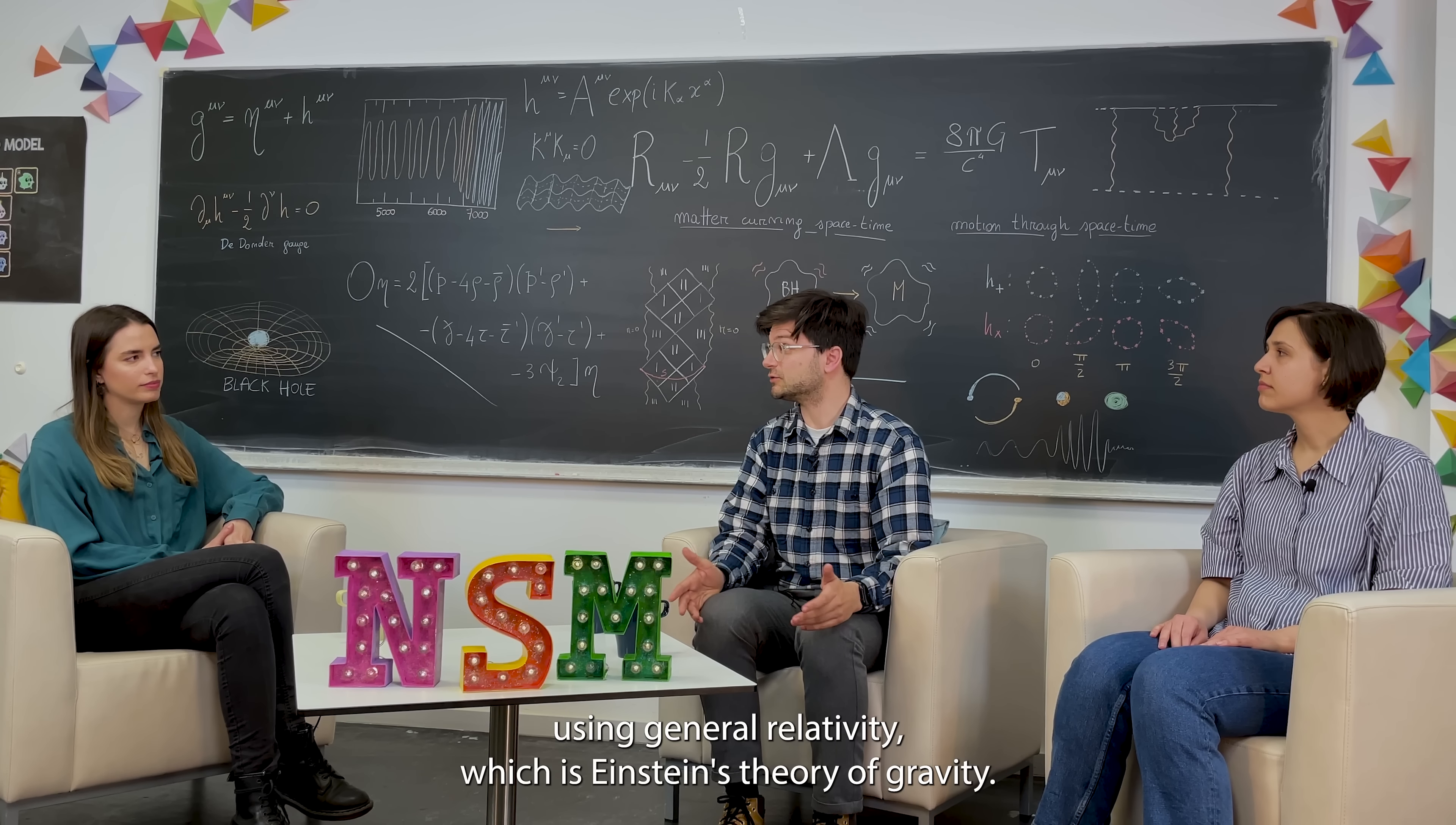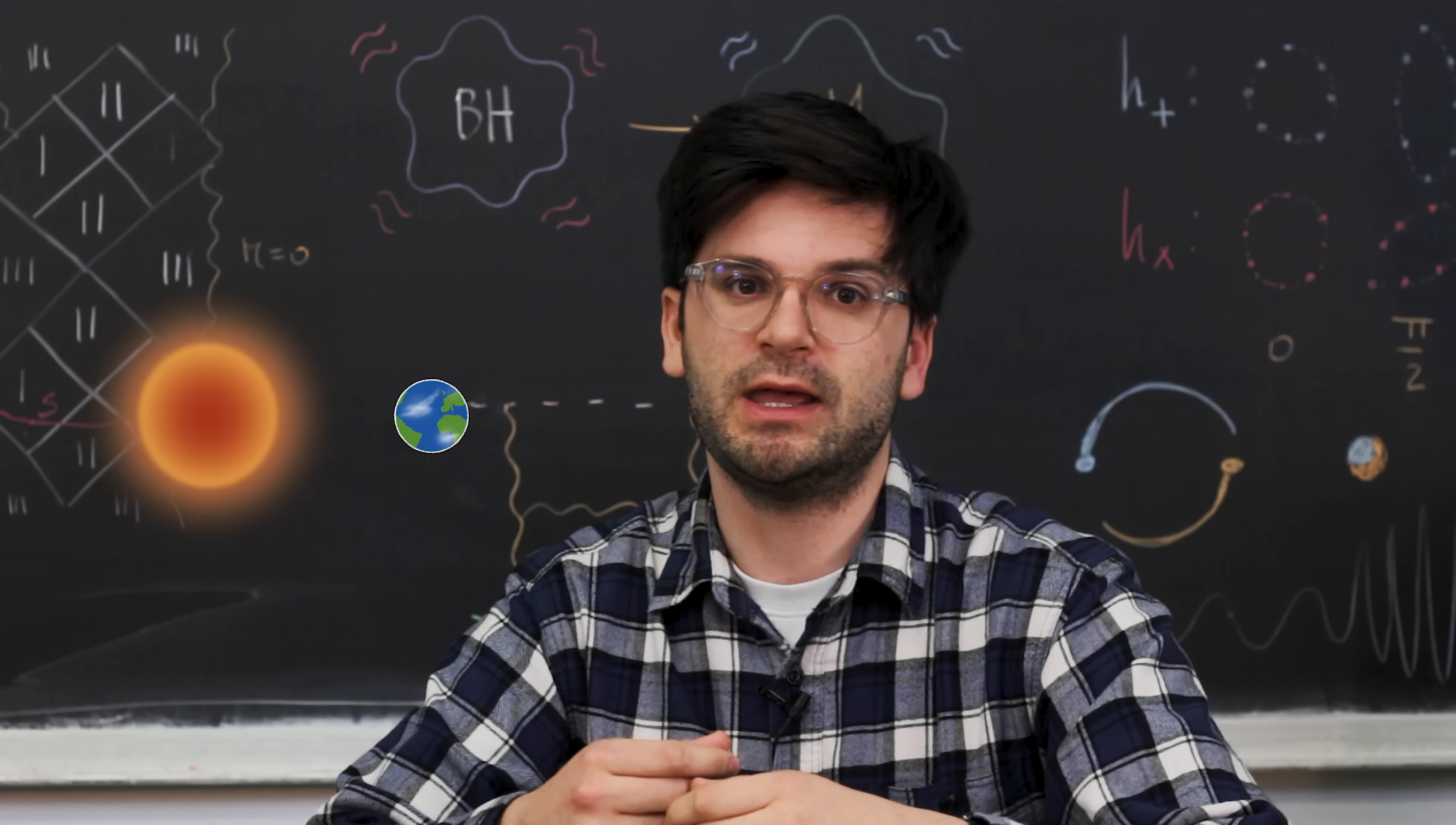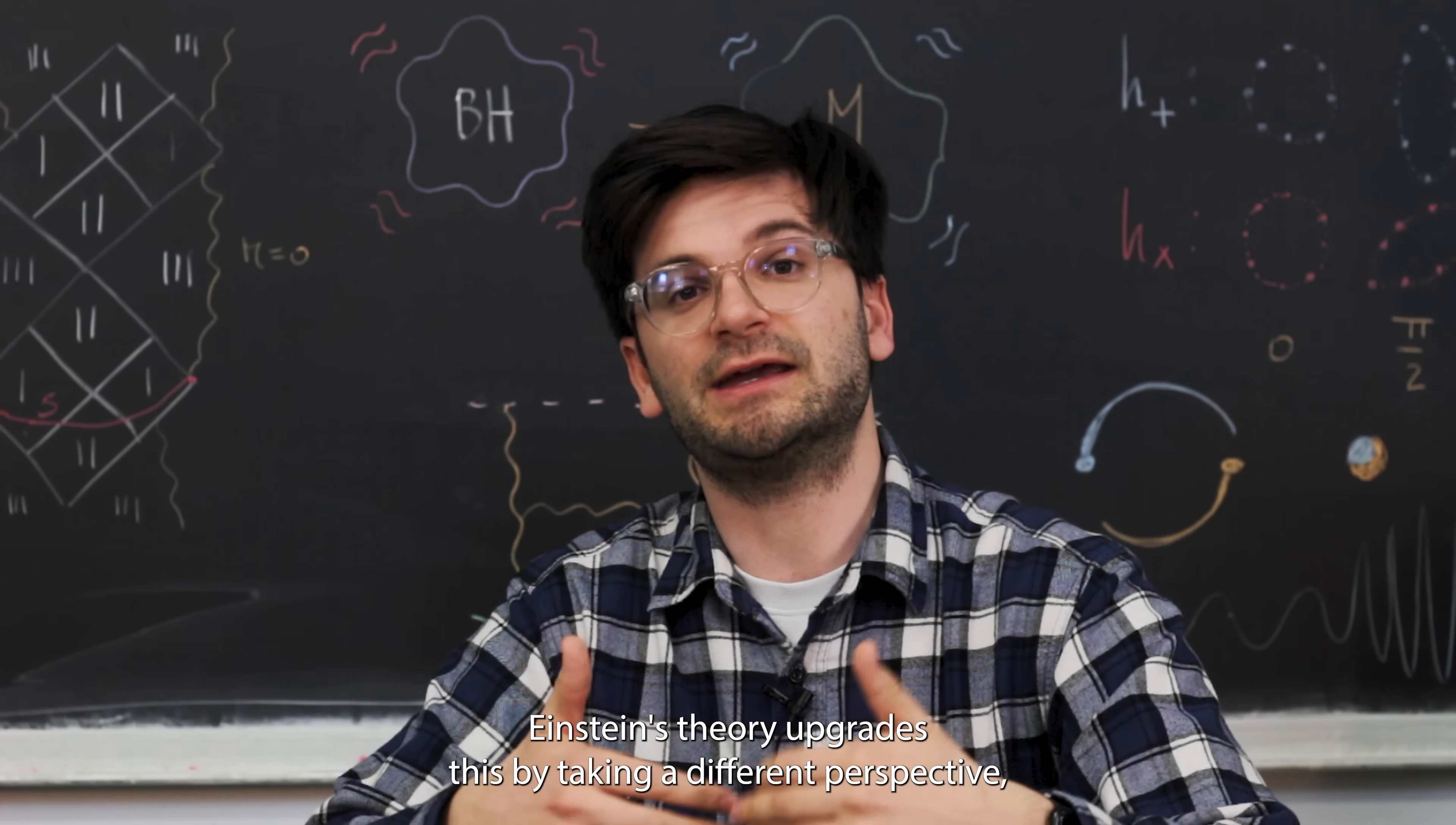Gustav, how do we describe gravitational waves? We describe gravitational waves using general relativity, which is Einstein's theory of gravity. Before we had general relativity, we had Newtonian gravity, in which case we think of objects as interacting via a gravitational force. But unfortunately this has some limitations. It only works if the gravitational force is weak and these objects are slowly moving.